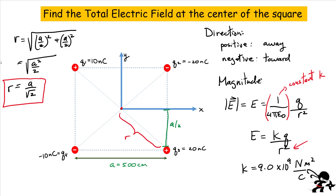So how would you find R? If this is a square, that distance from a corner to the center is simply half the diagonal. You can write R equals the square root of (A/2) squared plus (A/2) squared, which simplifies to A squared over two. Taking A out of the square root, you're left with R equals A over root two. We know the distance from each charge to the center, and we'll need that in our expression for the electric field. Let's now plot the electric field vectors produced by each of those charges at the center.